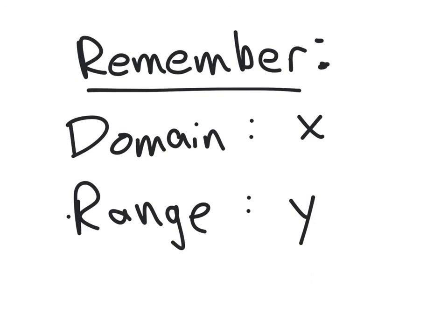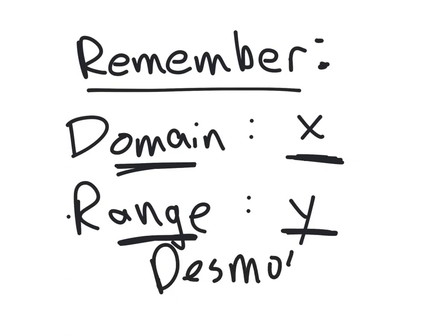The main thing to remember is to always check first whether you're looking for domain — the x values — or range — the y values. If you're not given a graph, quickly go to Desmos.com, check out the graph, find the asymptotes, and zoom in and out to determine domain and range. If there are any questions, leave a comment. See you next time.